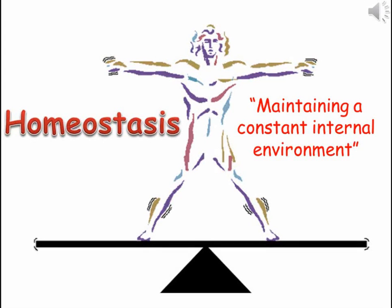Homeostasis is how an animal maintains a constant internal environment. All of the processes that take place within an animal need a certain set of conditions in order to work properly. Homeostasis means controlling those conditions so that they are kept at a level where things work best.